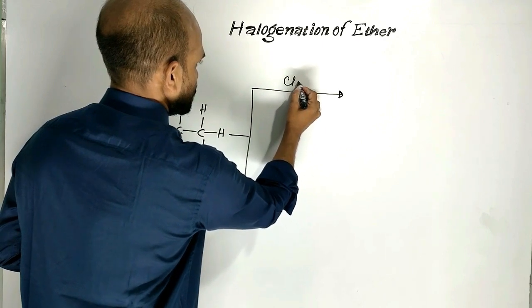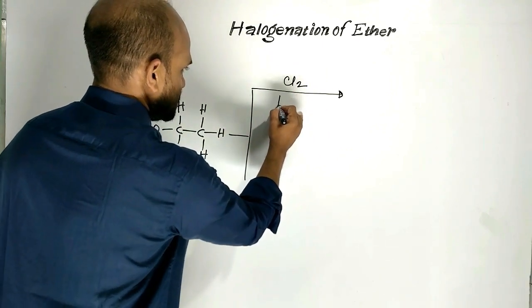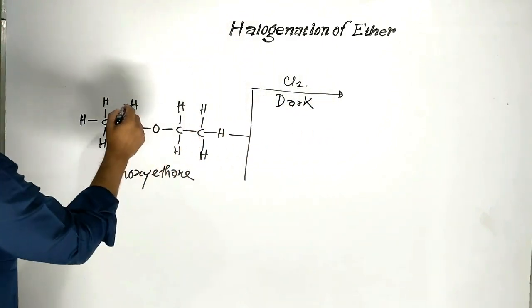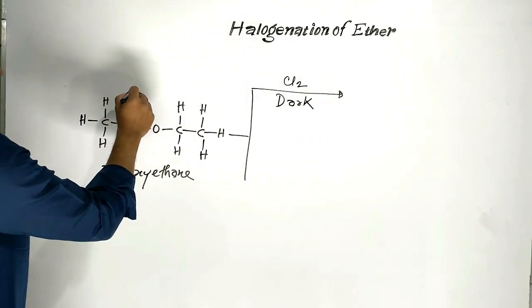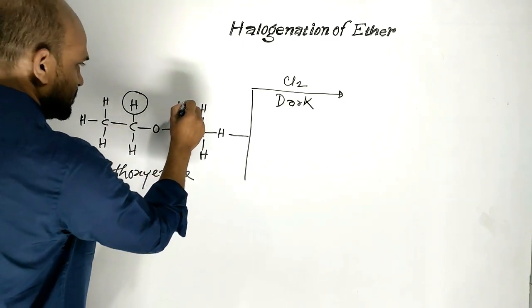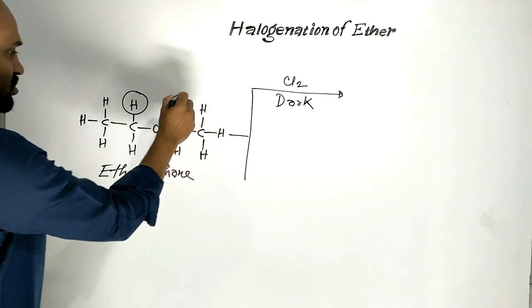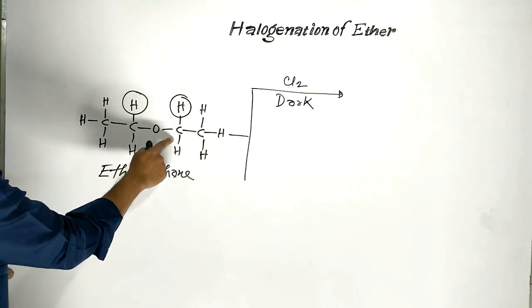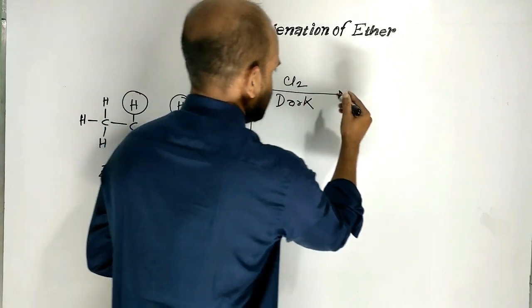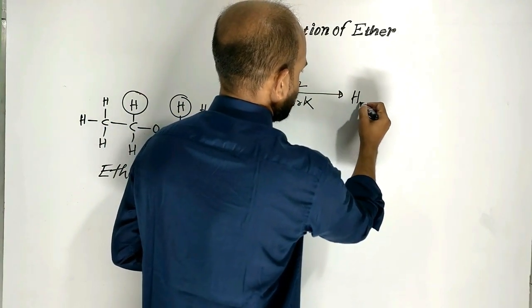Suppose chlorine in the dark, then one hydrogen atom from one carbon and another hydrogen atom from another carbon are replaced by chlorine atoms. As a result, this is obtained.